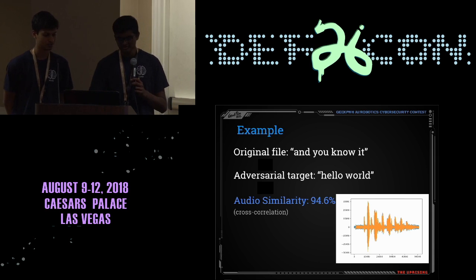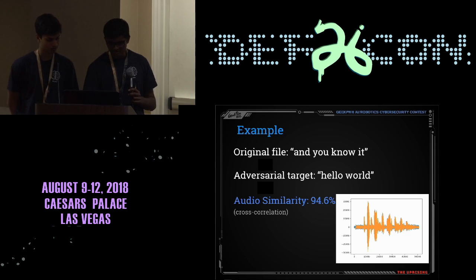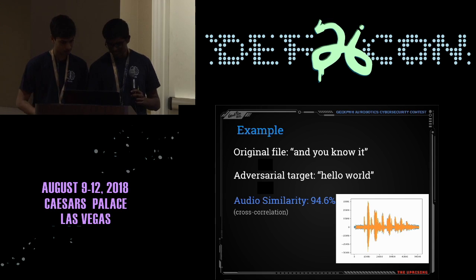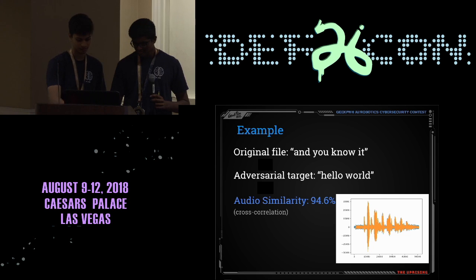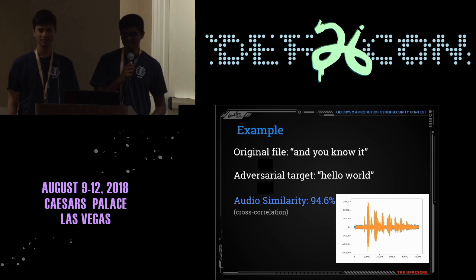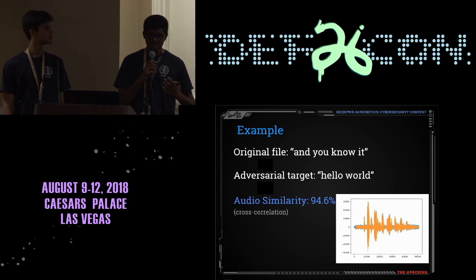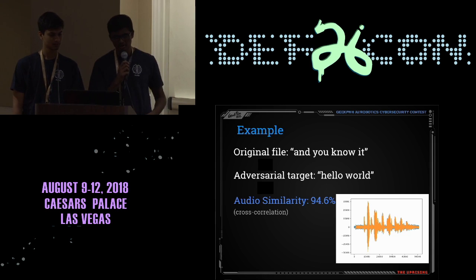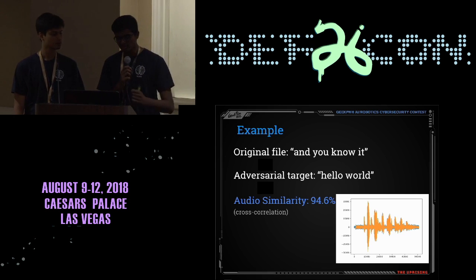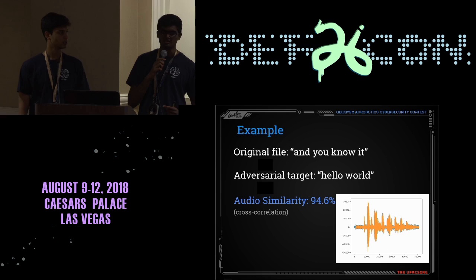Let's listen to some examples. The original input file decodes to 'and you know it'. We had some difficulties playing the audio, but the original input gets decoded as 'and you know it'. The adversarial target is our perturbed audio, which to humans sounds very similar — like 'and you know it' — but gets decoded as 'hello world'. Audio similarity is 94.6% using cross-correlation. On the bottom right, you can see spectrograms of the original audio (orange) and our perturbed example (blue) — there are very slight perturbations and most of it is very similar to the original benign input.